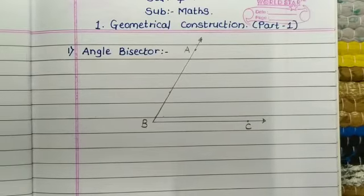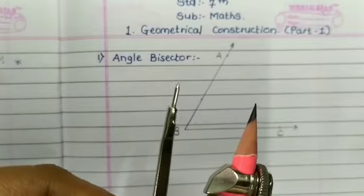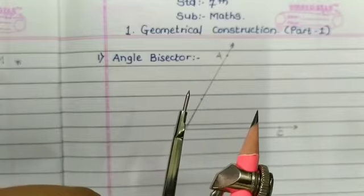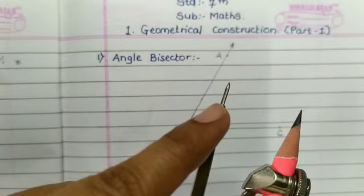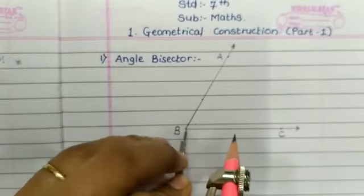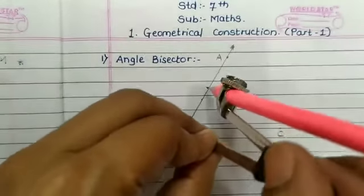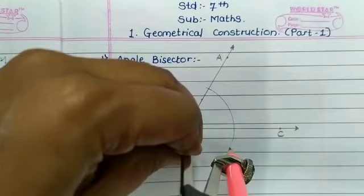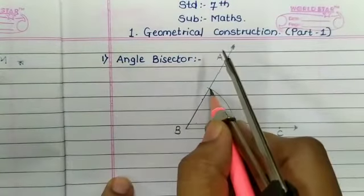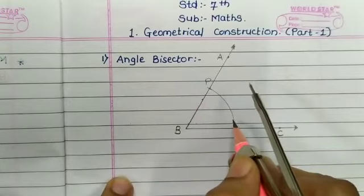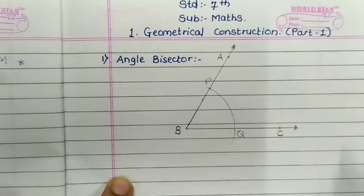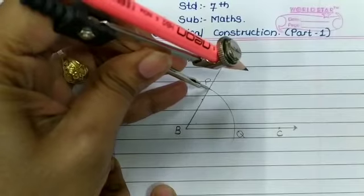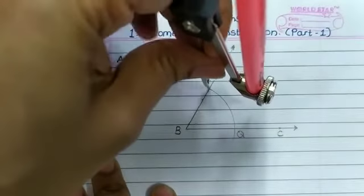For this we are using a compass. Open the compass to any convenient radius and place the steel head on point B like this, and draw an arc to intersect rays BA and BC at points P and Q respectively. Now place the steel head of the compass at point P.